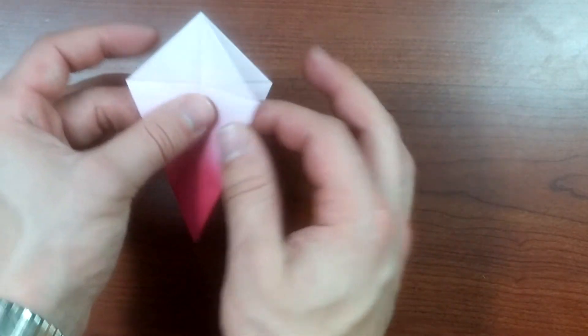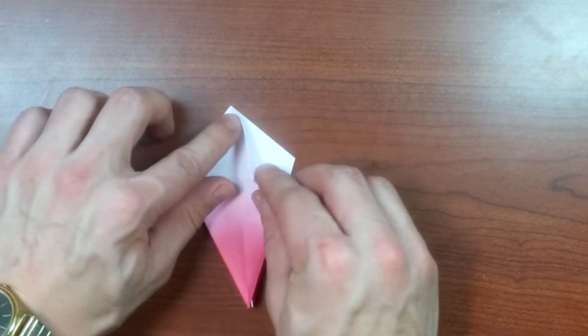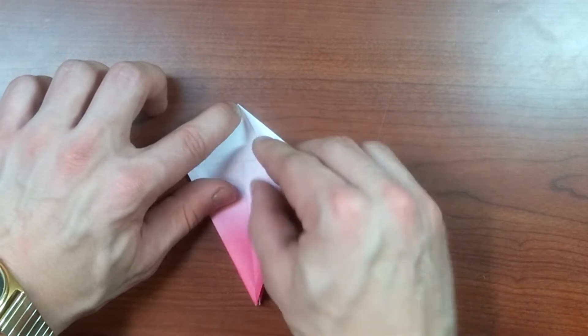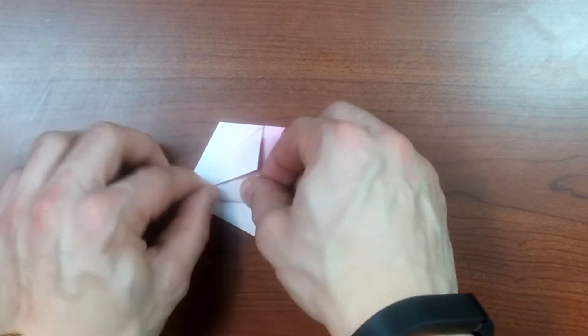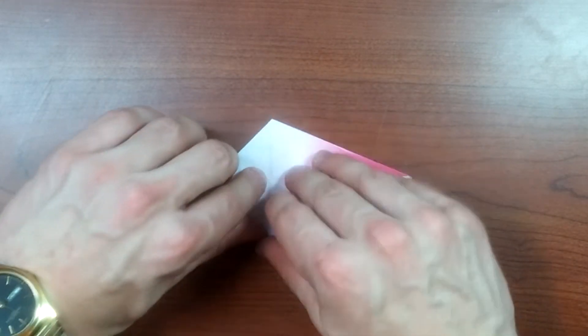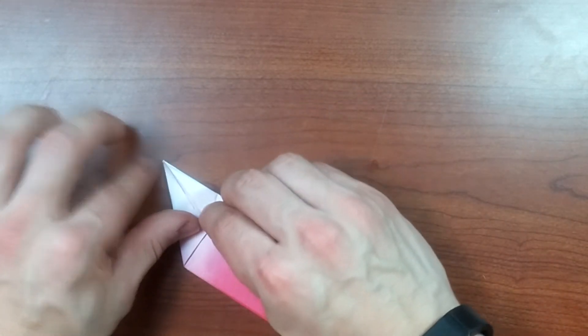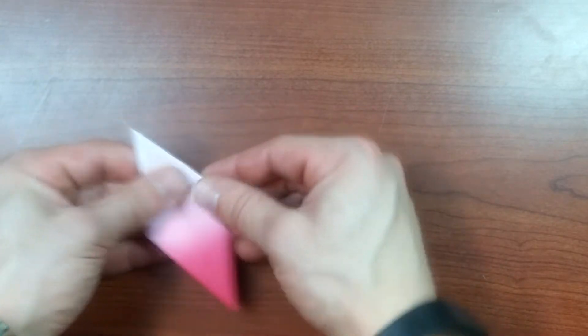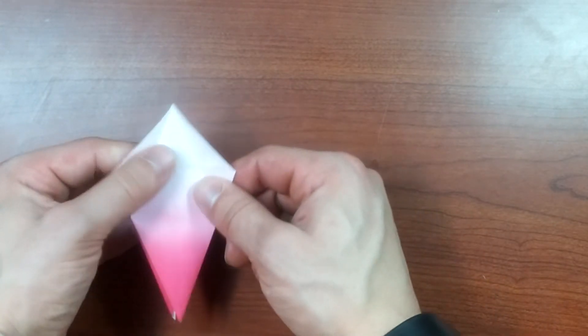Take the top two flaps and fold this edge into the center. Fold and do the same to the other side. Now do the same to the back. Okay. Flip it back over. Unfold only the top two. Do not unfold the back two.